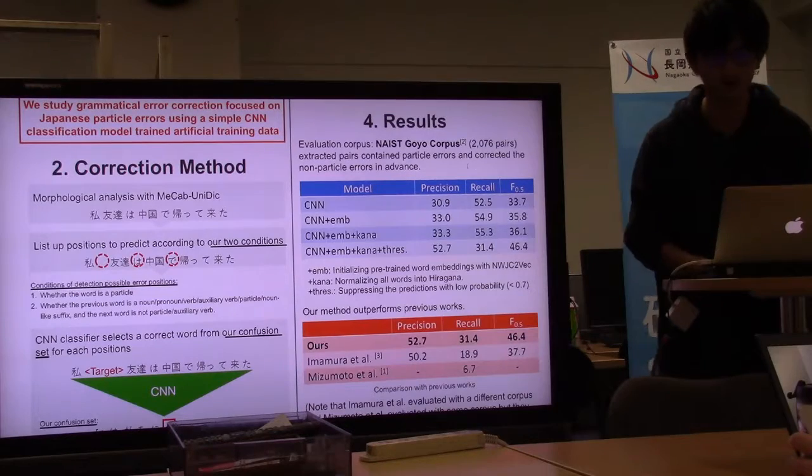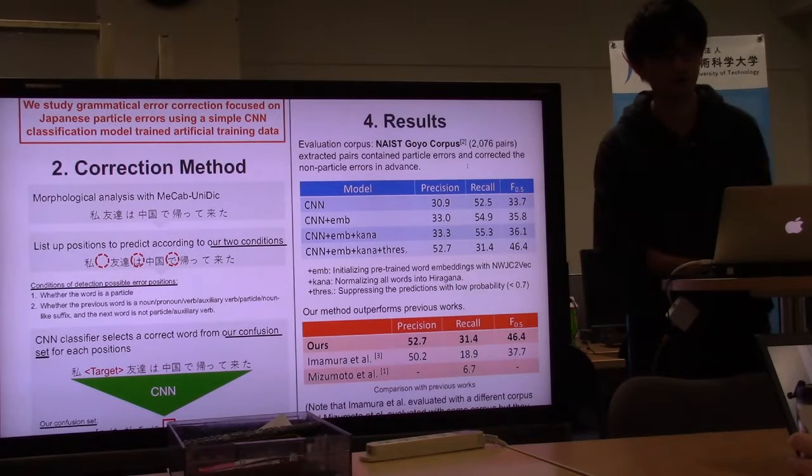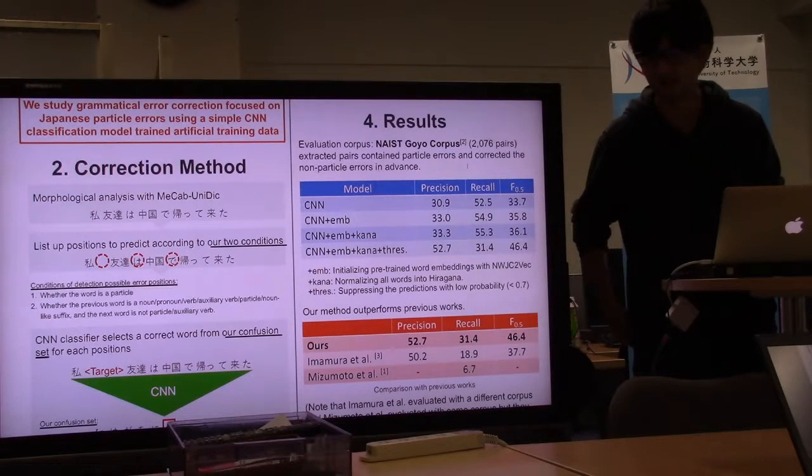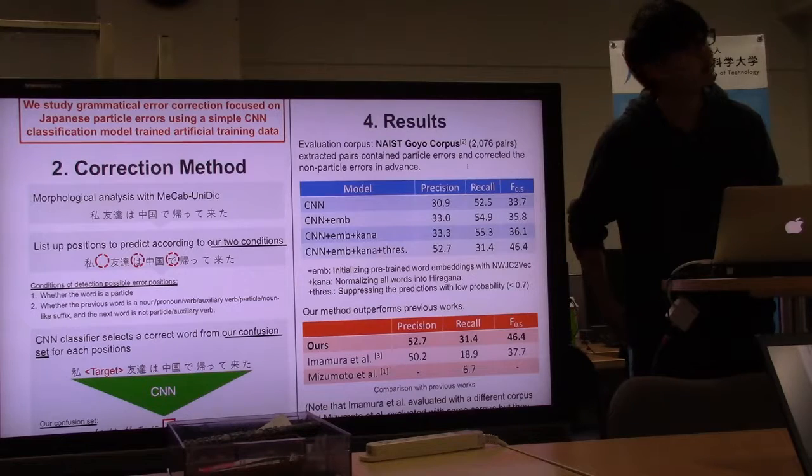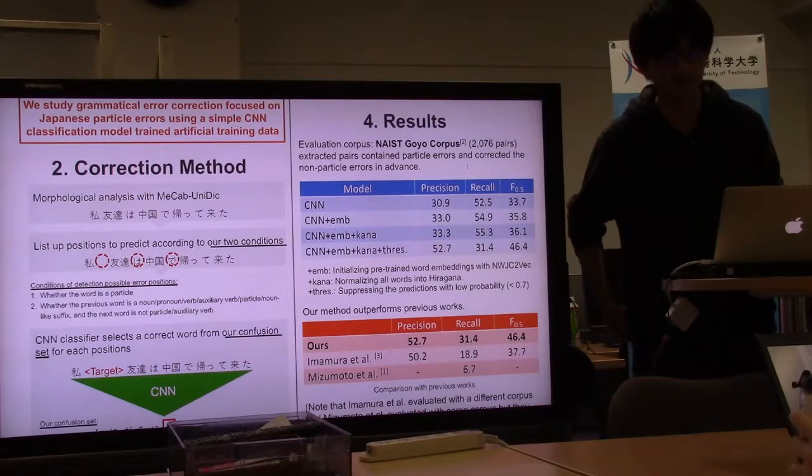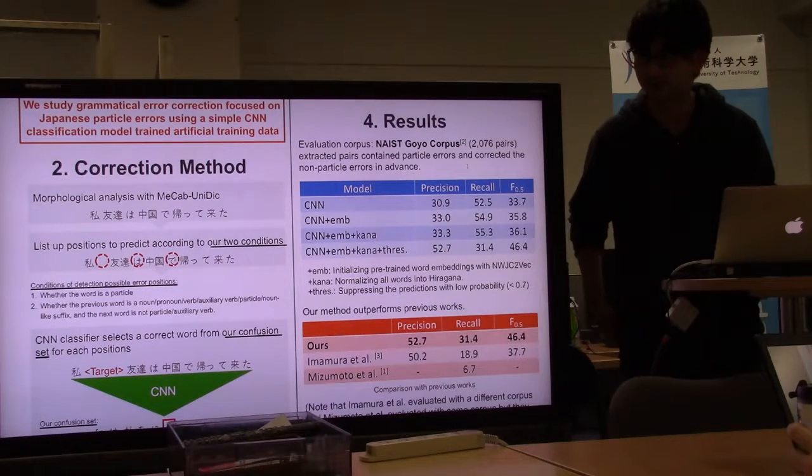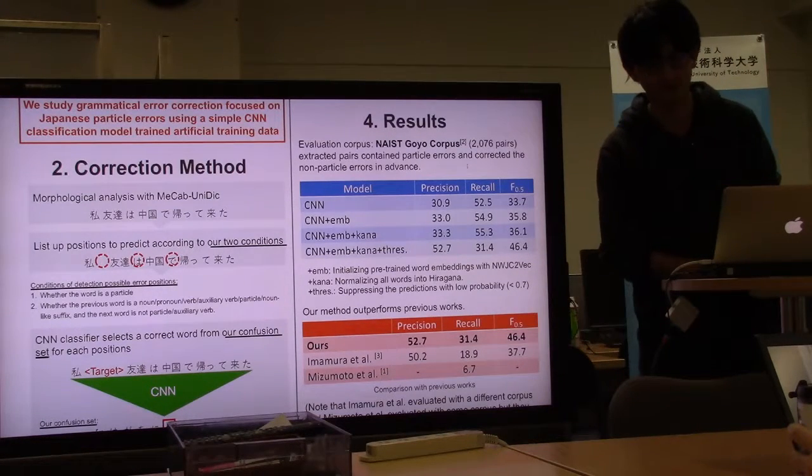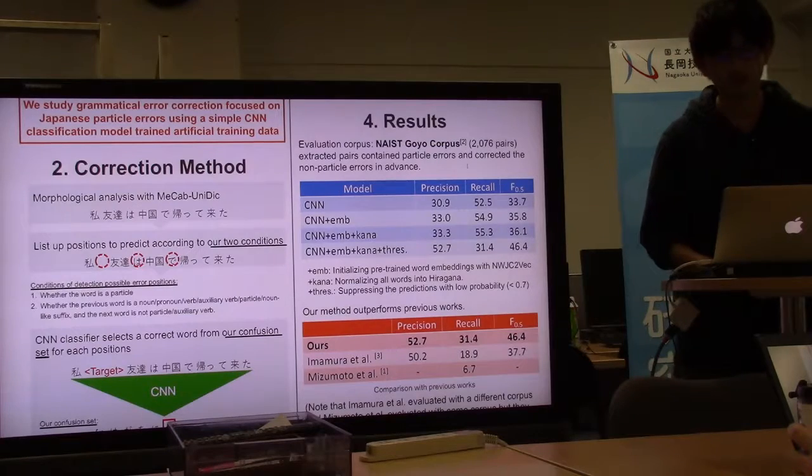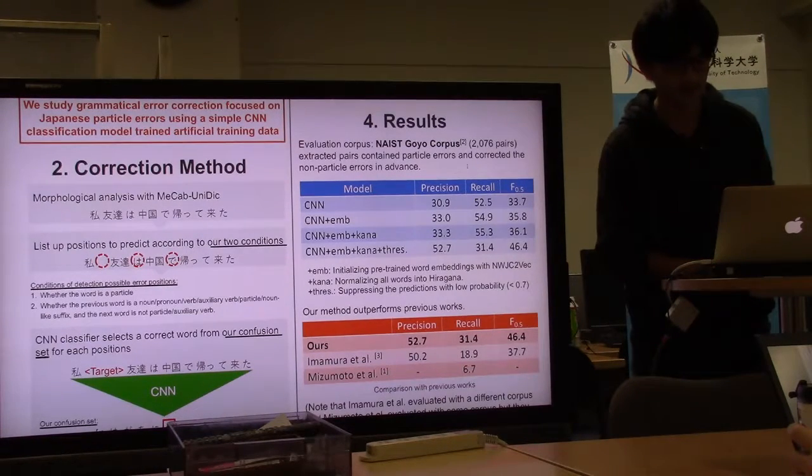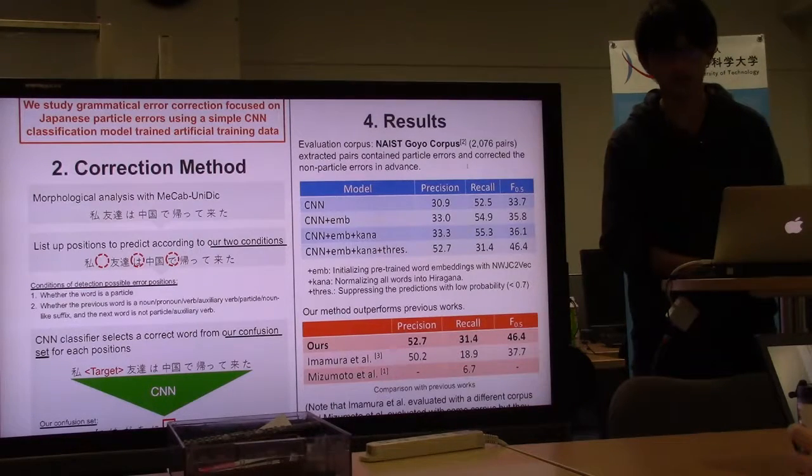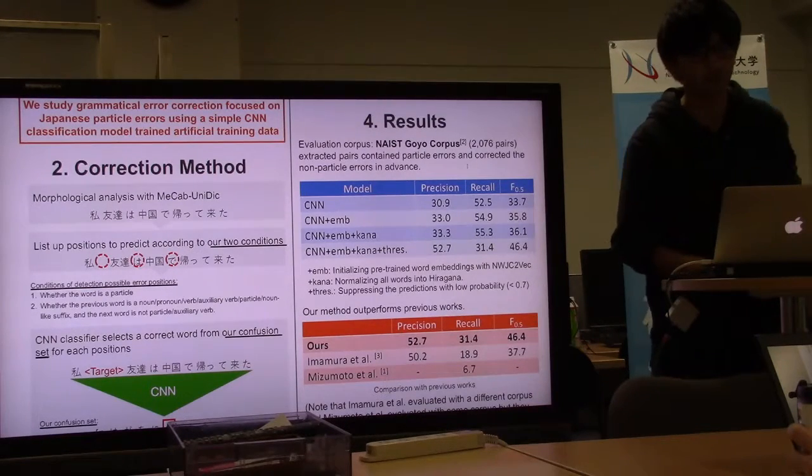For evaluation of our correction method, we used NAIST Lang-8 corpus which contains two thousand seven hundred seventy-six pairs of Japanese learner's sentences and its annotations. We extracted pairs containing particle errors and corrected the non-particle errors in advance.